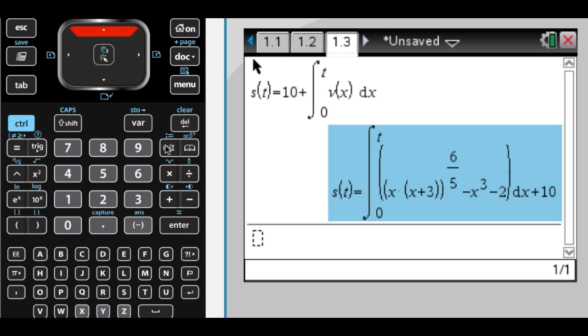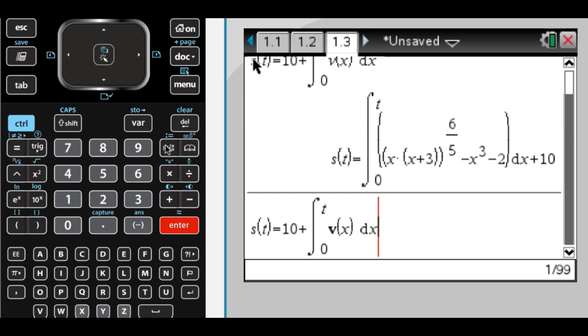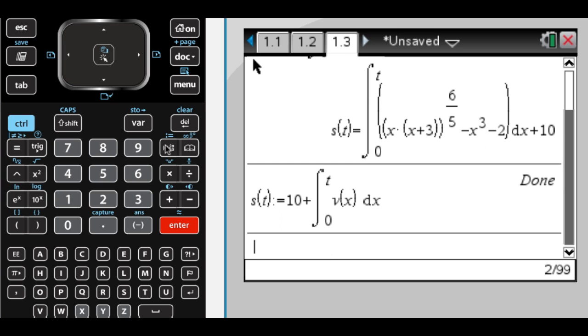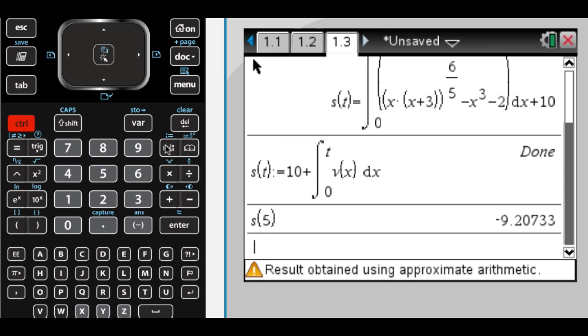And then what I would do is, actually I could use that. Let me go back here and instead of just saying equals, I'm going to store that thing. And now what I need to do is find the position at 5. So that's just S of 5, which is 10 plus the integral from 0 to 5 of v of x dx, which is approximately negative 9.207. And you get this creepy message here, result obtained using approximate arithmetic. So I'm pretty confident that it's right, but that's pretty scary.